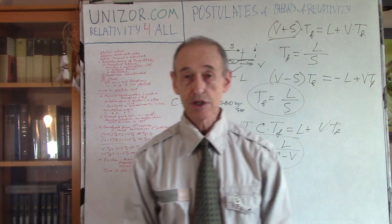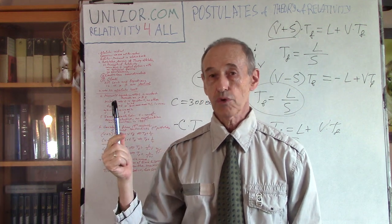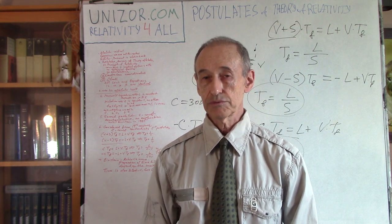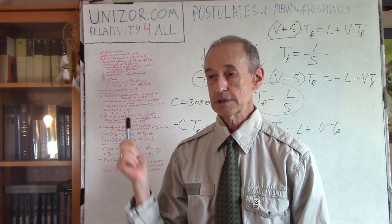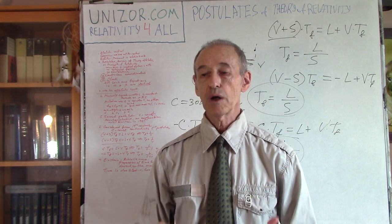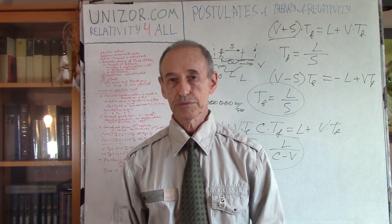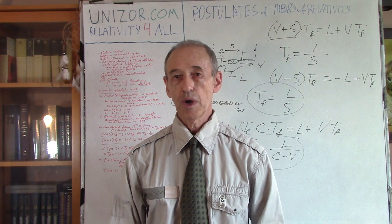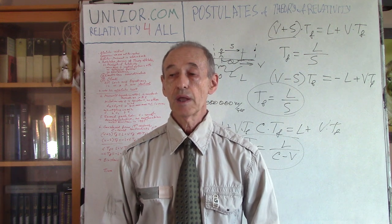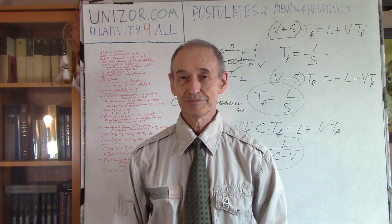I suggest you read the notes for this lecture on unizor.com — go to the Relativity for All course, and the topic is called Einstein View. This covers the foundation and postulates of the theory of relativity: the first postulate is the principle of relativity — all laws are the same in inertial frames — and the second is the constancy of the speed of light. Thank you very much, and good luck!